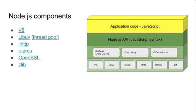LLHTTP — as I said, this is the request-response parser. You can see this is C++ code. It's complex — I don't want to read through it all, but you can see here this is C++ code.